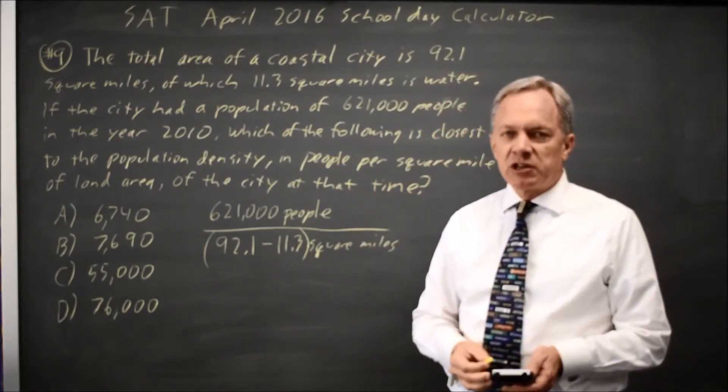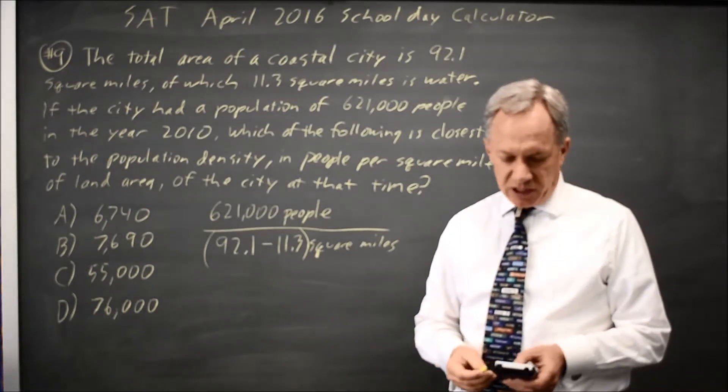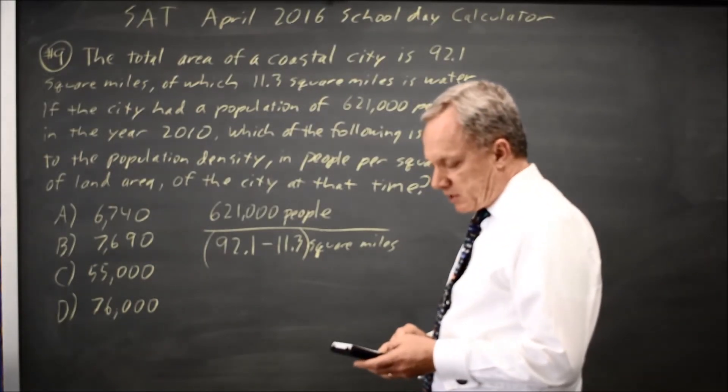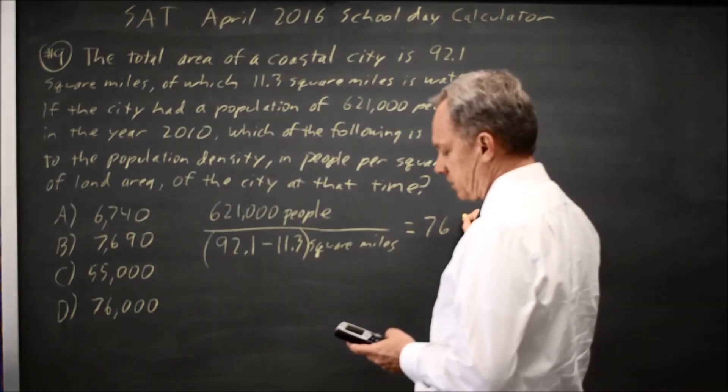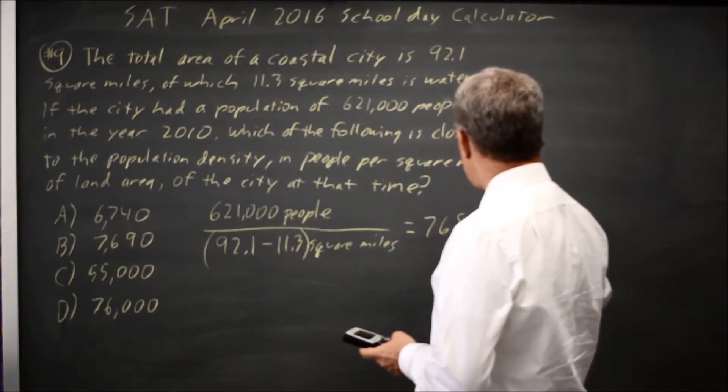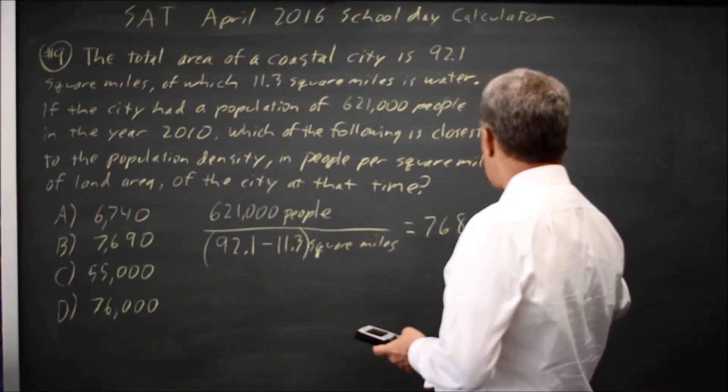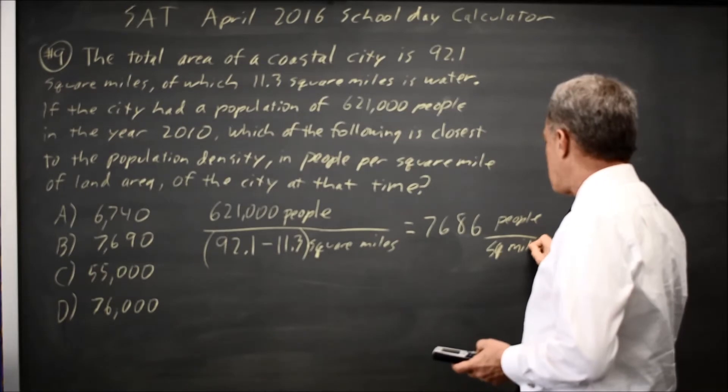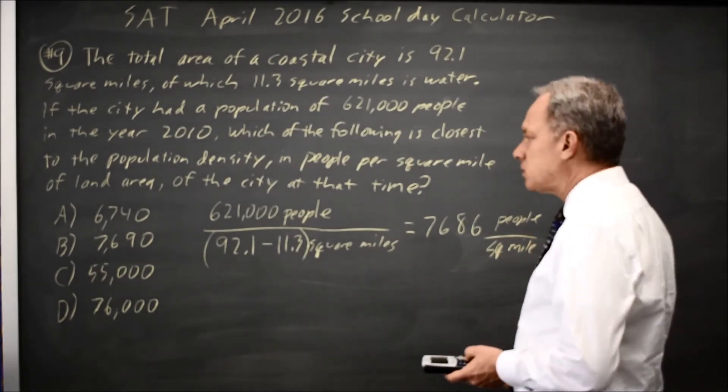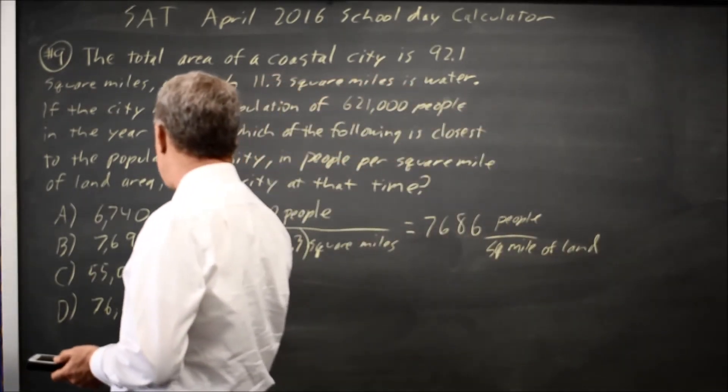Often dimensional analysis like this will tell you how to find the correct answer. Certain denominators 80.8 and 621,000 over 80.8 is 7686 people per square mile. So the answer would be choice B.